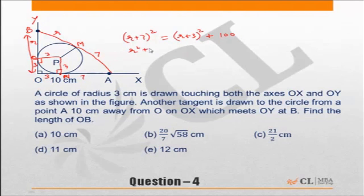That means R² + 49 + 14R = R² + 9 + 6R + 100. R² cancels out. 14 minus 6 gives 8R equals...